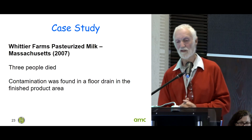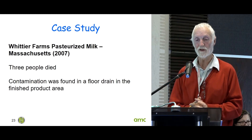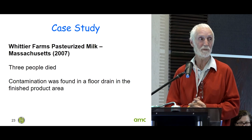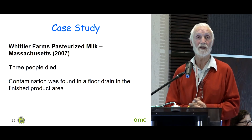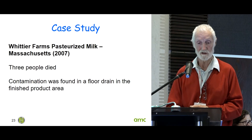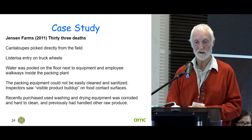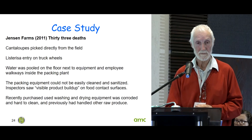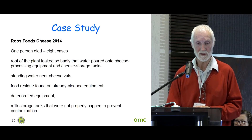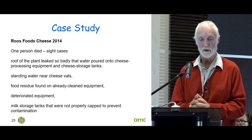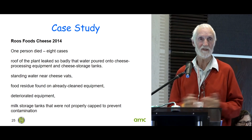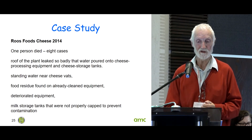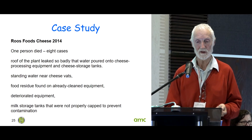Some cases: three people died at Whittier Farms pasteurized milk — contamination was found in a floor drain in the finished product area, and I suspect the drain was running in the wrong direction. Jensen Farms had water pooled on the floor — all the construction things we shouldn't be having. In a cheese plant, the roof leaked with standing water near the cheese vats — once again, engineers are the bad boys. And milk storage tanks were not properly capped.